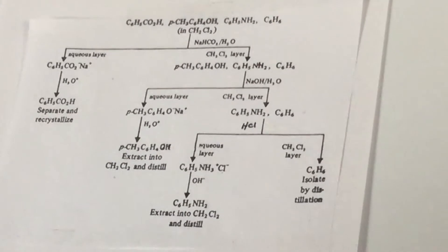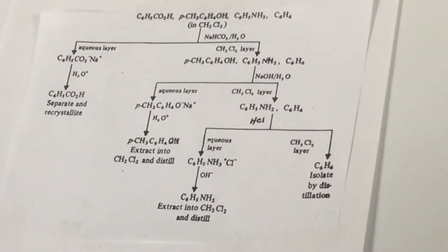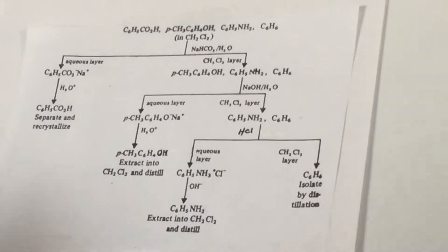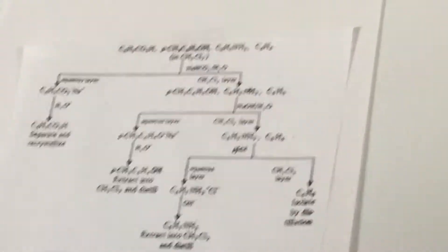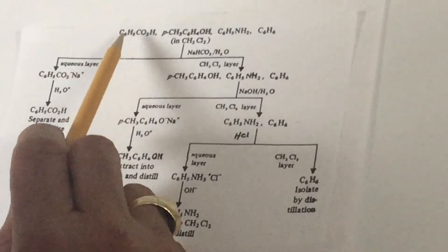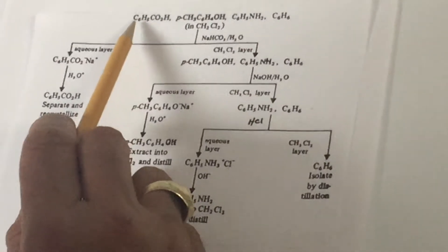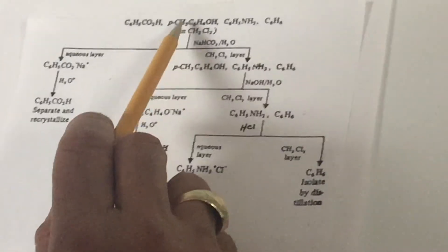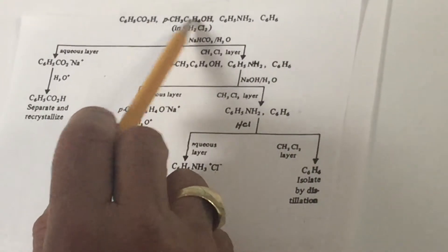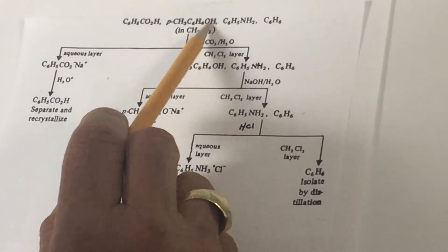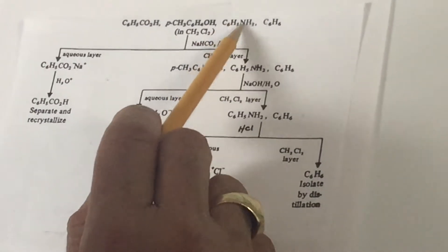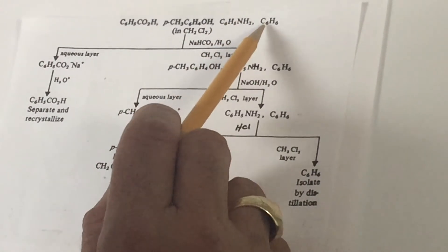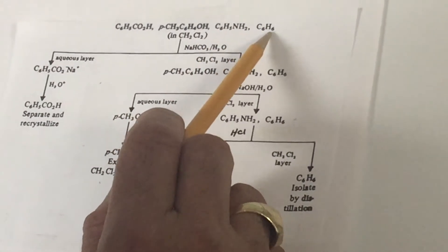What we have here is four compounds that are going to be placed in either ether or in this case dichloromethane. We have benzoic acid, we have paramethylphenol, we have aniline, and we have benzene.